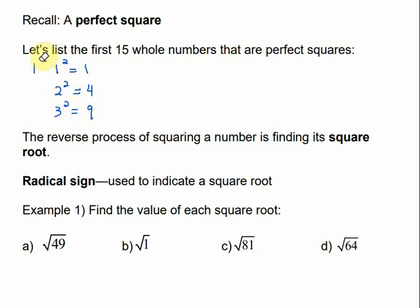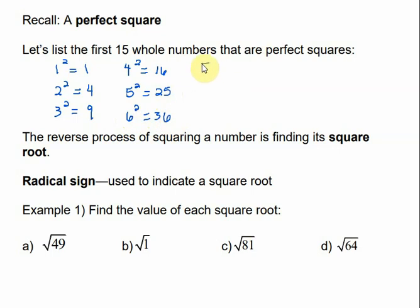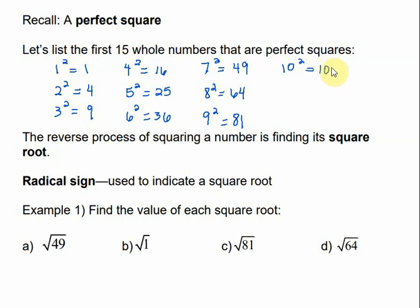Okay, so let me erase this part. 16 is a perfect square because 4 times 4 is 16. The next perfect square would be 25, then 36. 7 squared is 49, so 49 is a perfect square. 64 is a perfect square, and 81 is a perfect square.